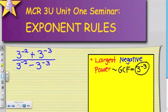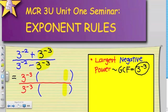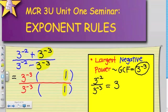So 3 to the power of negative 3 is what I'm going to take out of both the numerator and the denominator. When I do that, the second term of each binomial — 3 to the power of negative 3 divided by 3 to the power of negative 3 — gives an answer of 1 for both. Then I have to figure out what 3 to the power of negative 2 divided by 3 to the power of negative 3 is. Keep the base the same and subtract the exponents: negative 2 minus negative 3 is equivalent to 3 to the power of negative 2 plus 3, which is 3 to the power of 1.